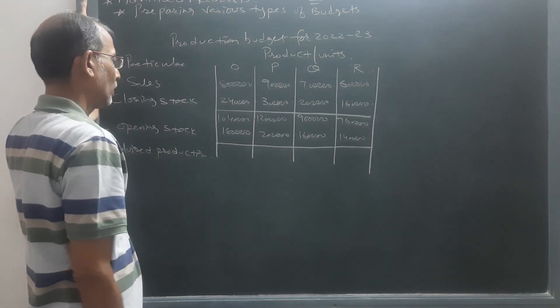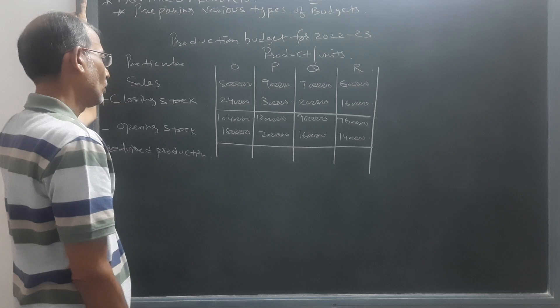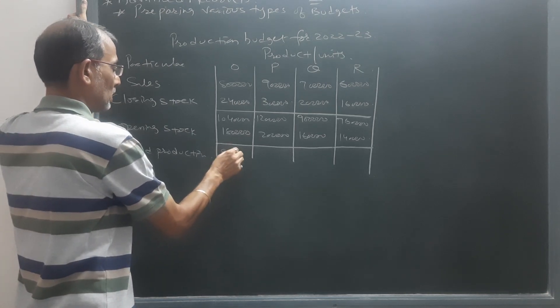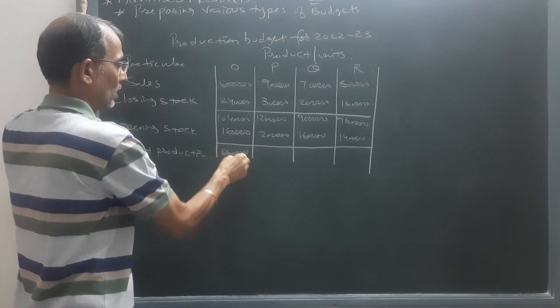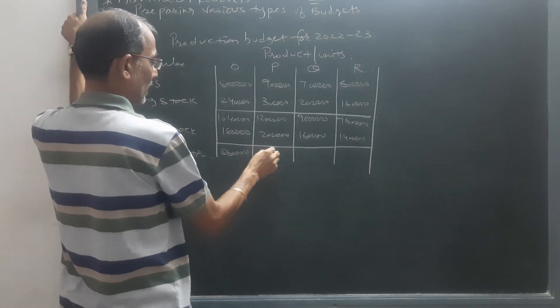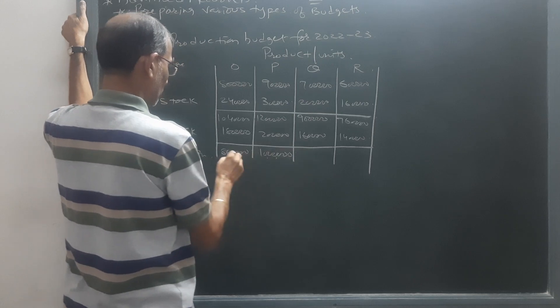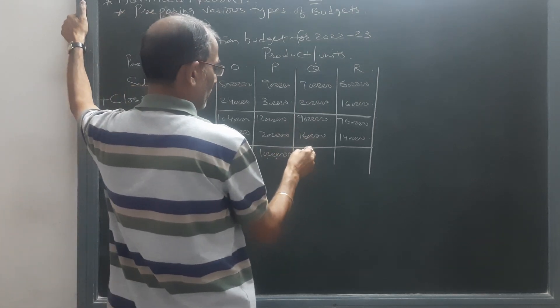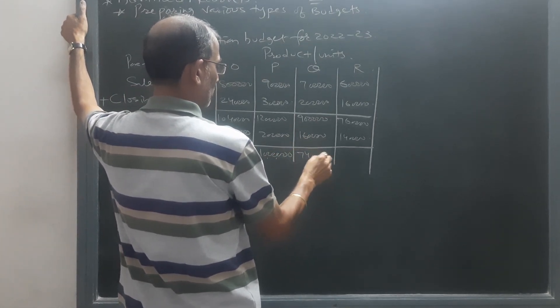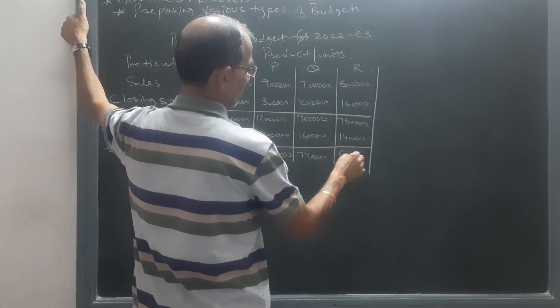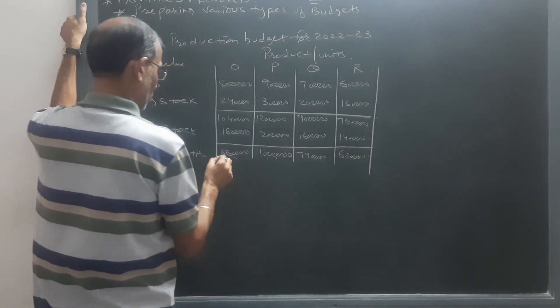So the production will be: 8 lakh 60 thousand, 10 lakh, 8 lakh 40 thousand, and 6 lakh 20 thousand. In this way we will come to know the required production of each and every product which company needs to produce.